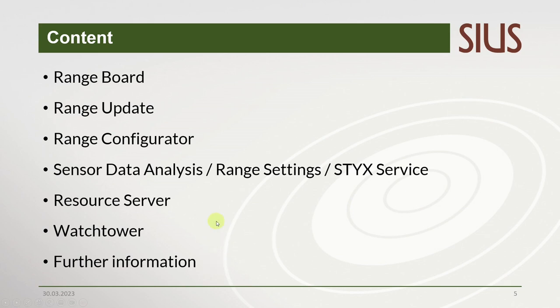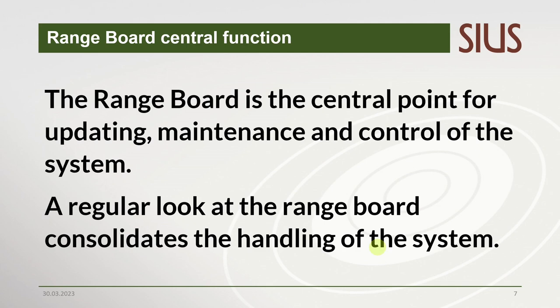Once you have the 951 together with the LS2550 you have a half STICS range. The 951 with the LS2550 have information that goes up to a point, and from there it goes to things that are in the full STICS range SR24. The central function of the range board is for updating, maintenance, and control of the whole system — the shooting range — and many things can be managed directly from here.